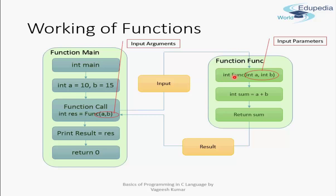We have defined the function func. Inside the function body, we declare a variable sum and assign it the value of a plus b — adding both input parameters. On the next line we return the value sum, which is where the output of the function is returned.